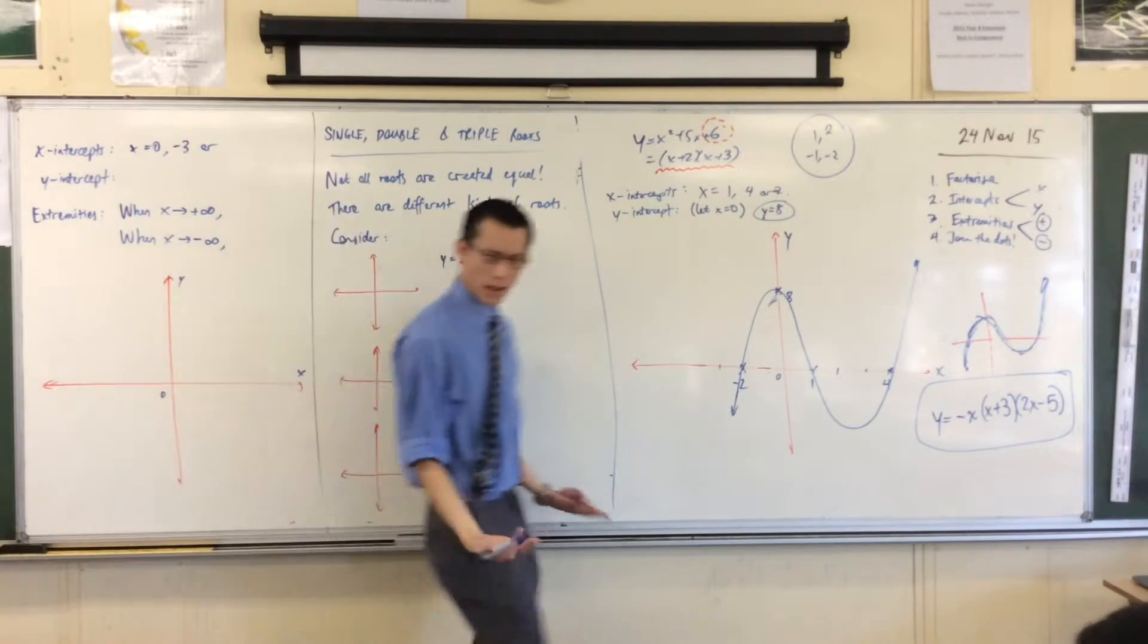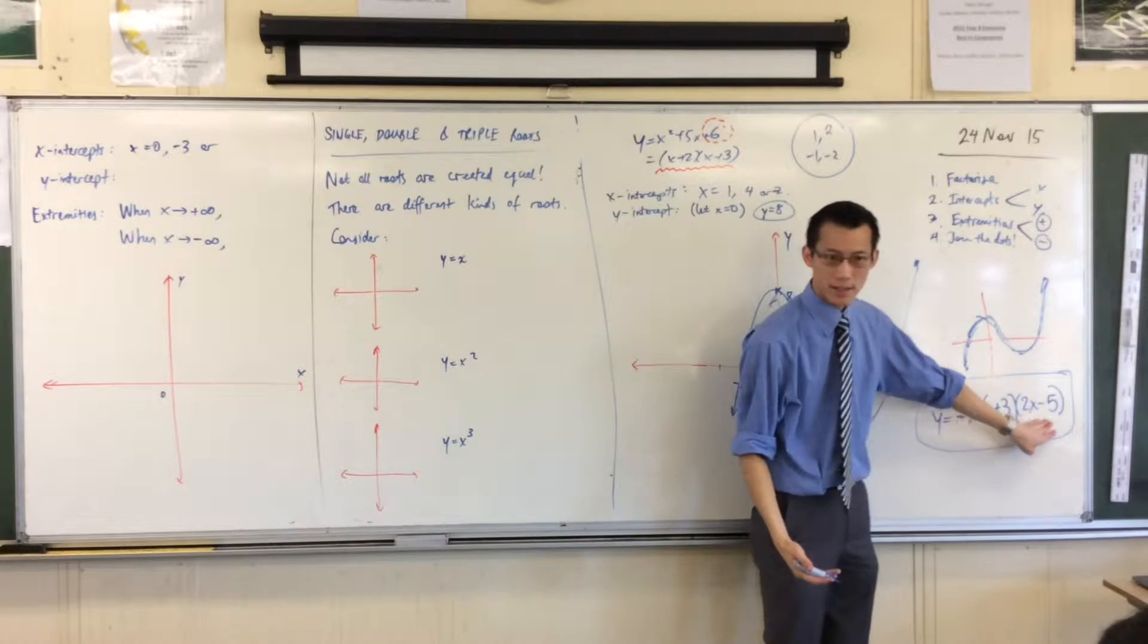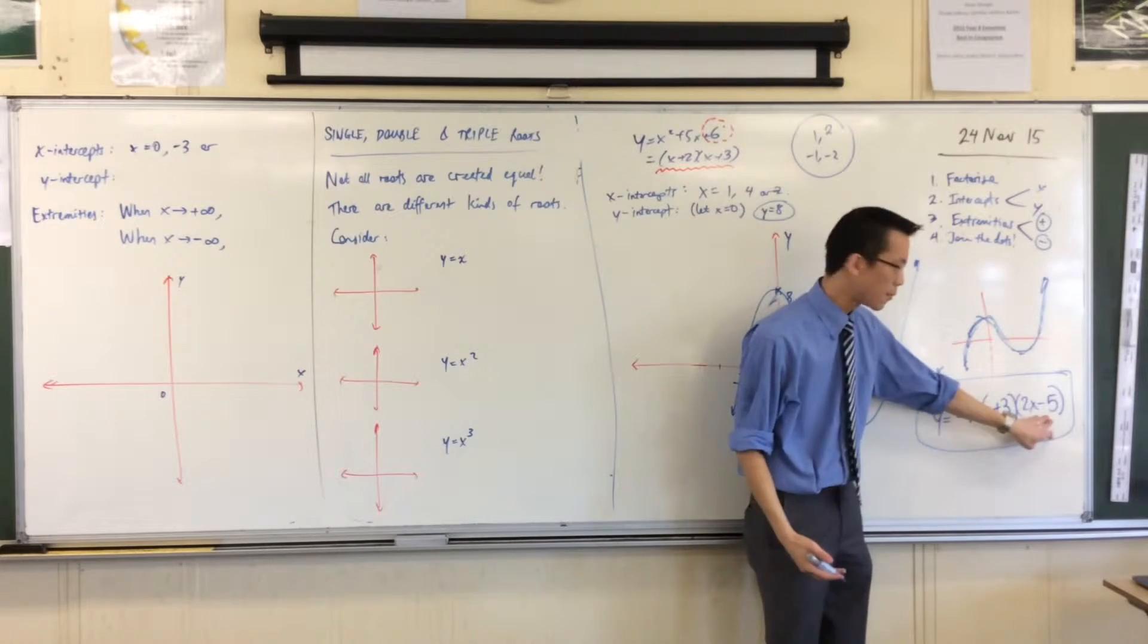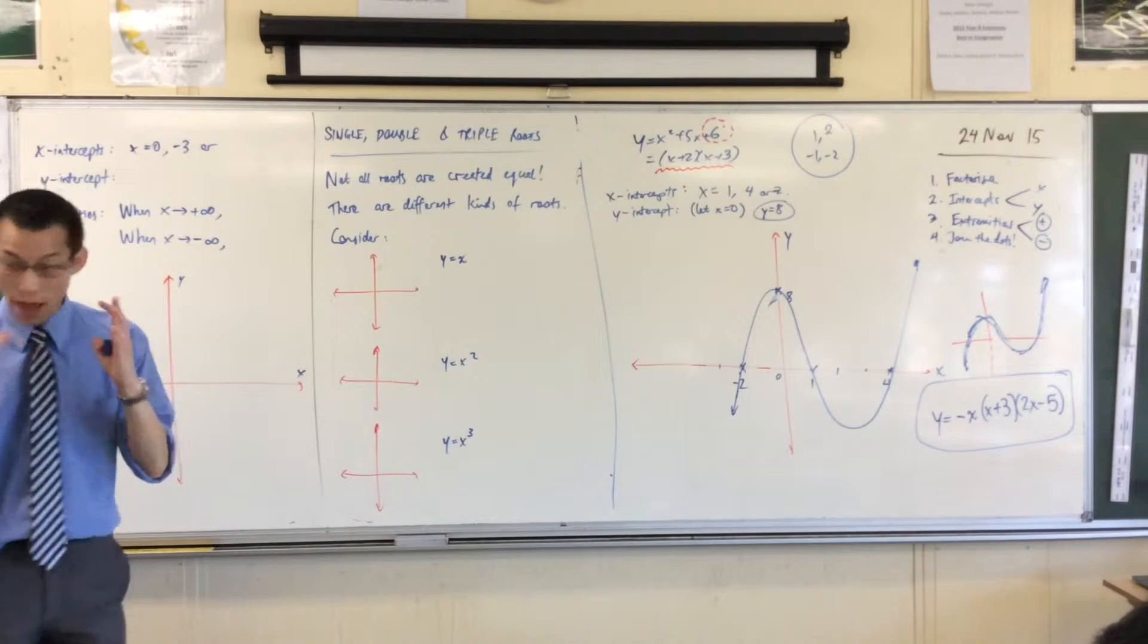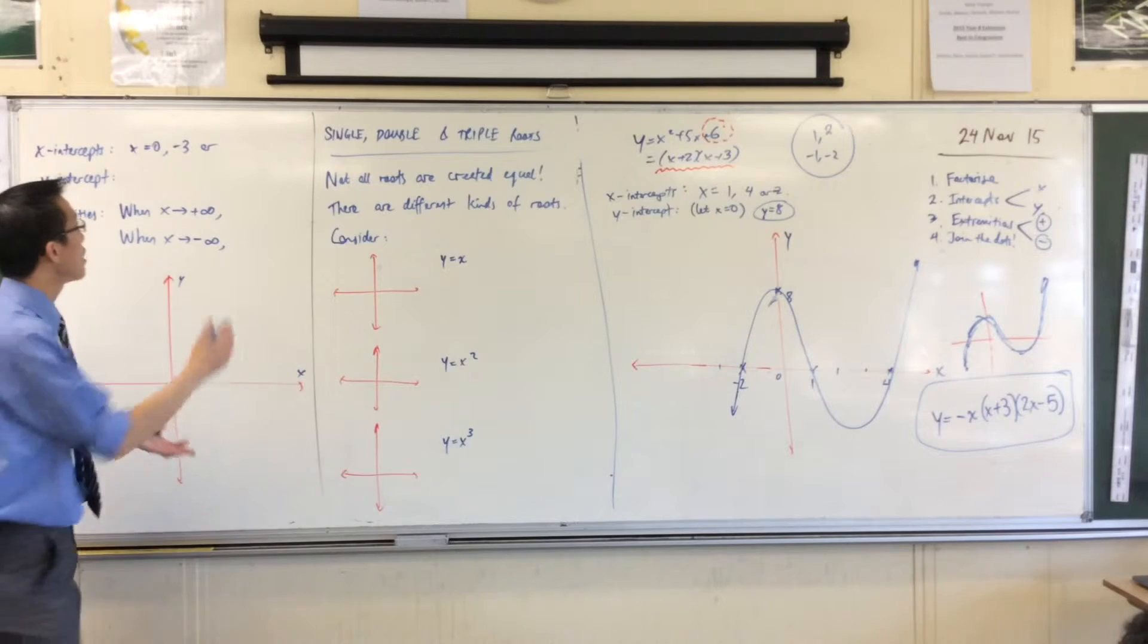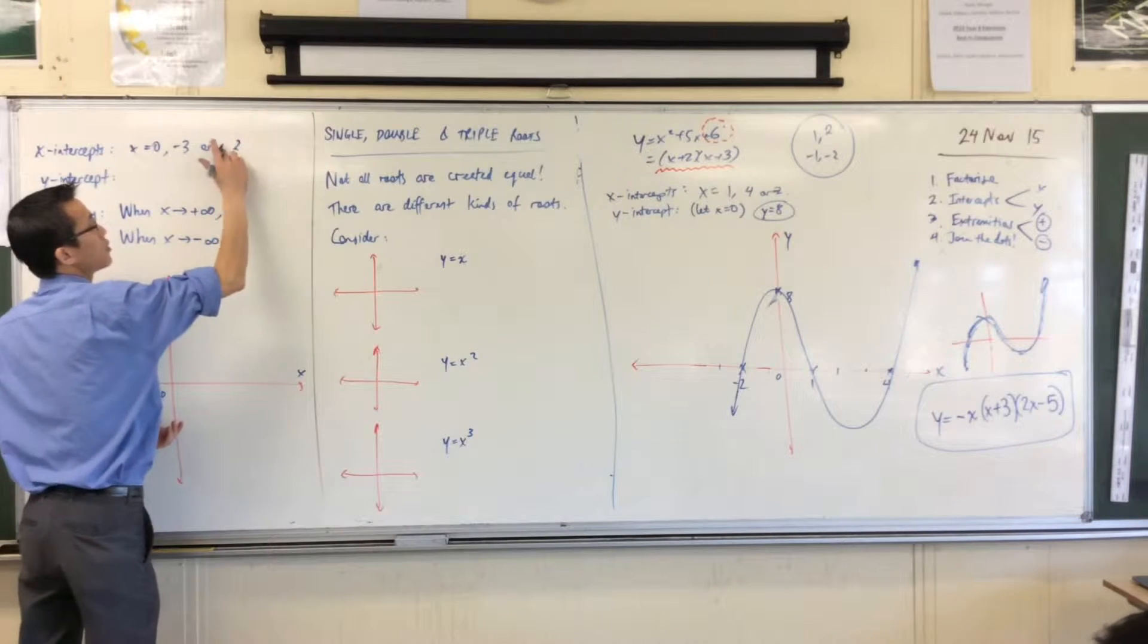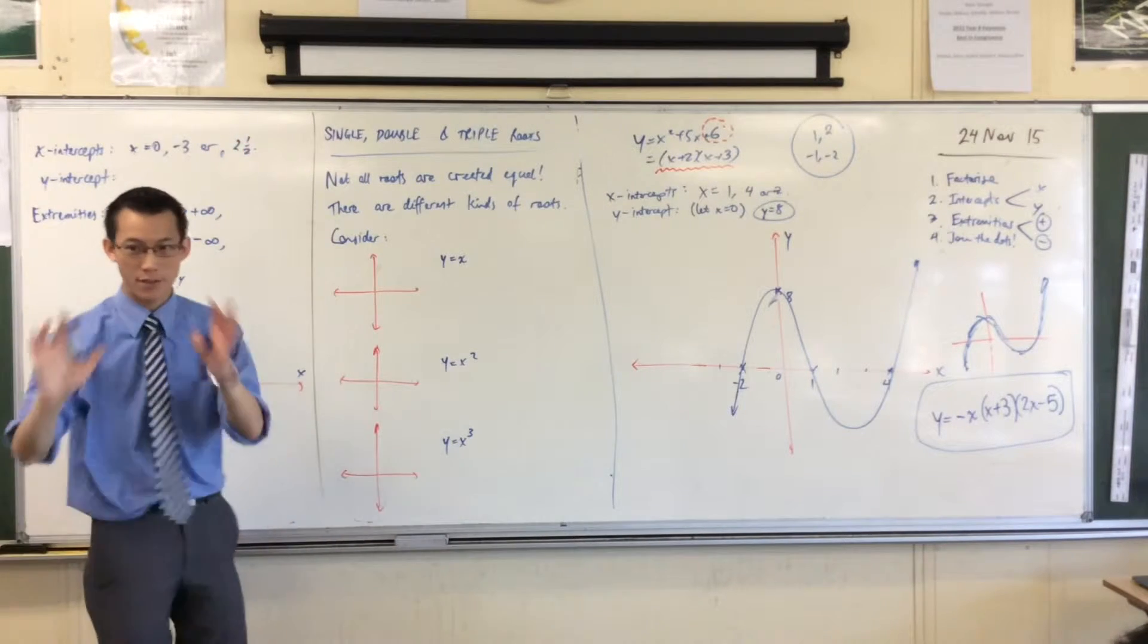And the last one is, what number do I put into here, is that last set of brackets, what number do I put in to make that last set of brackets 0? It'll be 5 over 2, or 2 and a half. So 2 and a half is my last x-intercept. Fantastic. Done.